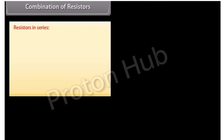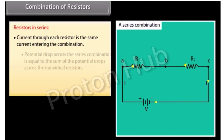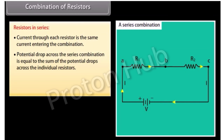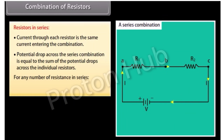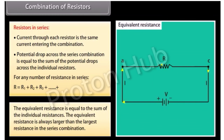In series, current through each resistor is the same. The potential drop across the series combination equals the sum of the potential drops across the individual resistors. For any number of resistors in series, R = R1 + R2 + R3 + … The equivalent resistance is always larger than the largest resistance in the series combination.